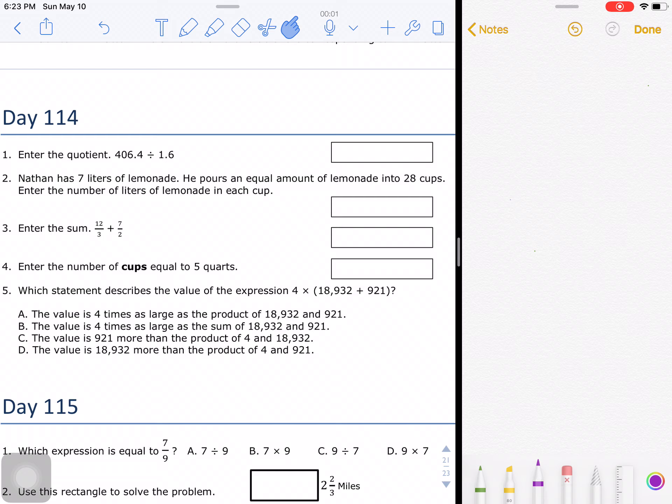If I multiplied 1.6 by 10 and I multiplied 406.4 times 10, that's what I would have. Because I multiplied them both by 10, I have equivalent expressions. So I can just divide this like they were whole numbers, and we'll check our answer at the end.